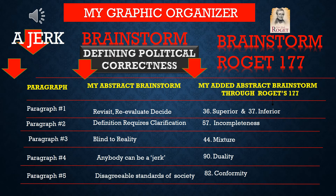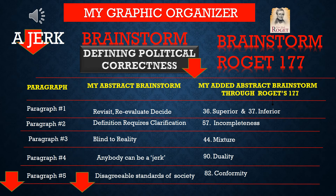Here's my final graphic organizer. Under the title Jerk, you can see the five paragraphs listed on the left. Under the brainstorming, you can see how I reacted to not only the title — Defining Political Correctness — but also each paragraph, how I decided what the author's intent was, what his purpose was, what he was trying to say in abstract terms. And on the right-hand side, you'll see the list going down of all the Roger concepts that, one by one in each paragraph, I found.